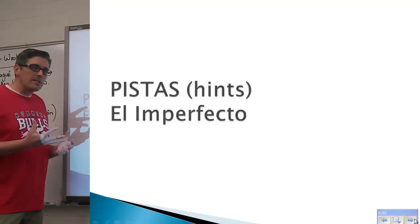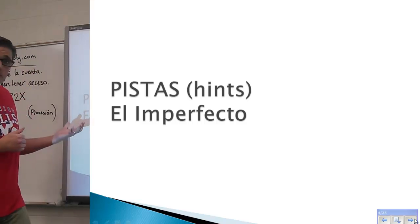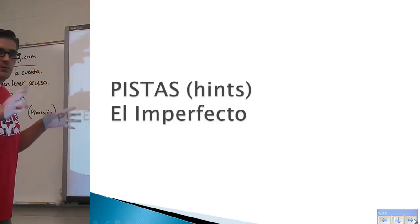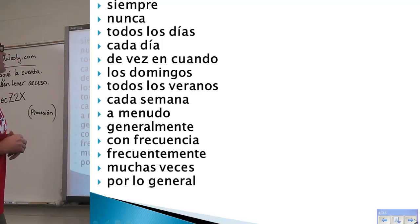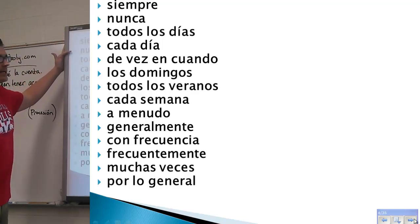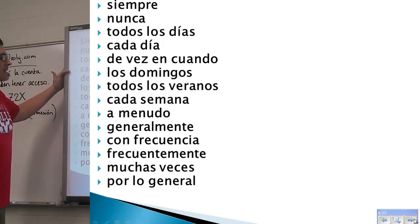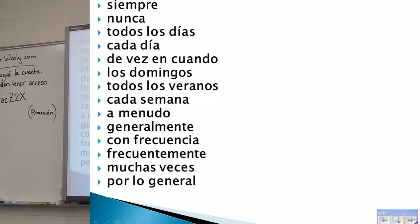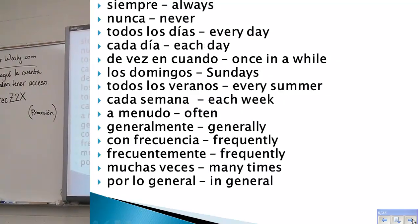Let's look at a few hints — words that will give you a warning that it's going to be imperfect. Words like siempre (always), nunca (never), todos los días (every day), cada día (each day), de vez en cuando (every now and then), los domingos (on Sundays), todos los veranos (every summer), cada semana (each week), frecuentemente, con frecuencia — these words indicate something that's going to repeat.